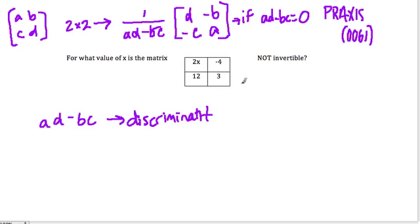If the discriminant is 0, it can't be inverted. So here they want to know when is this discriminant 2x times 3, A times D minus B times C.